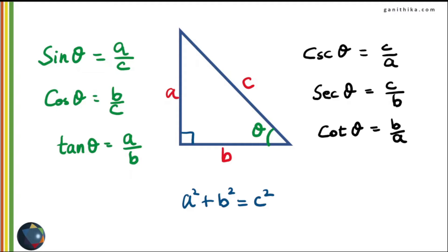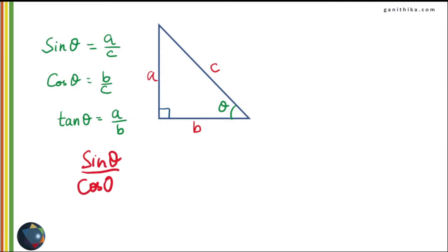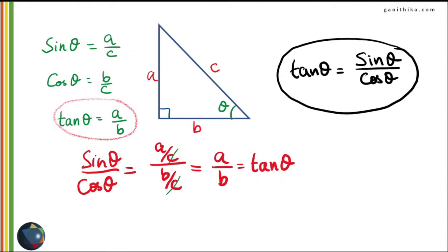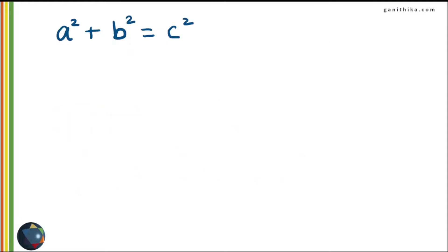With all this information we will prove the trigonometric identities. First, let's find sin theta over cos theta. Applying the ratios A over C for sin theta and B over C for cos theta, dividing cancels the C's, giving A over B. Since A over B equals tan theta, sin theta over cos theta equals tan theta.